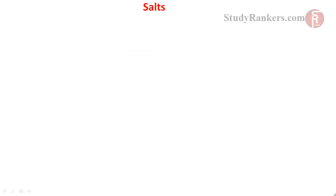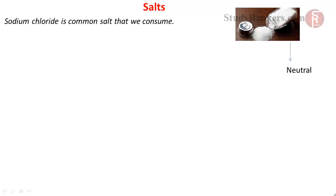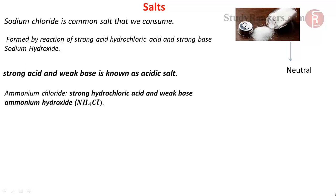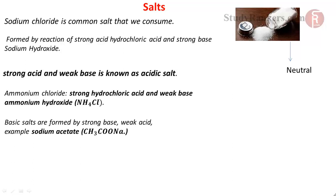Now, coming to salt. Salt, as we know, is formed by the reaction of acid and base. Sodium chloride is the common salt we consume; it is formed by the reaction of strong acid hydrochloric acid and strong base sodium hydroxide — such salts are known as neutral salts. Salt formed by a strong acid and weak base is known as acidic salt, for example ammonium chloride. Basic salts are formed by a strong base and weak acid, for example sodium acetate.